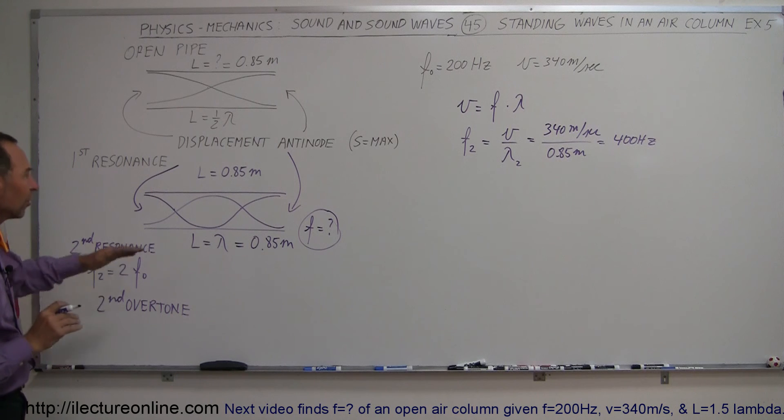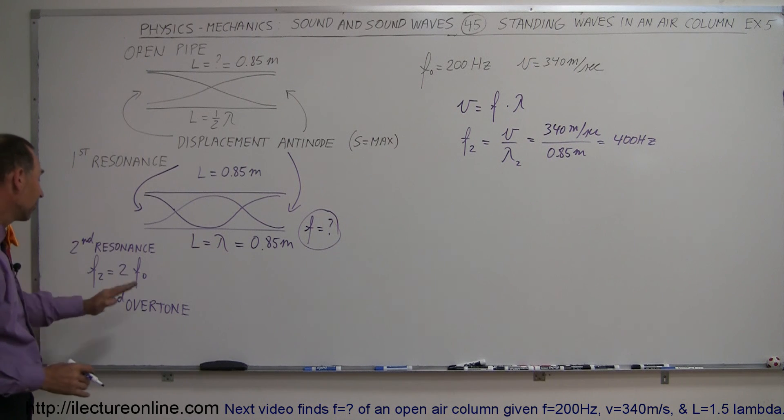In closed-end pipes, the second situation was three times the frequency, therefore we call that the third overtone, but in an open-end pipe, the second resonance is equivalent to the second overtone.